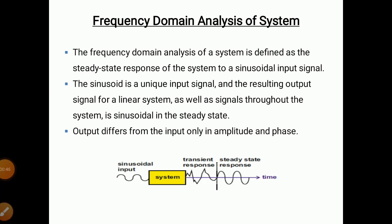The sinusoidal signal is a unique input signal, and the resulting output signal for a linear system is also sinusoidal in the steady state. If you apply a sinusoidal signal to any system, the output will also be in the form of a sinusoidal waveform. However, the output differs from the input only in amplitude and phase — there will be a difference in amplitude and phase of the output waveform.